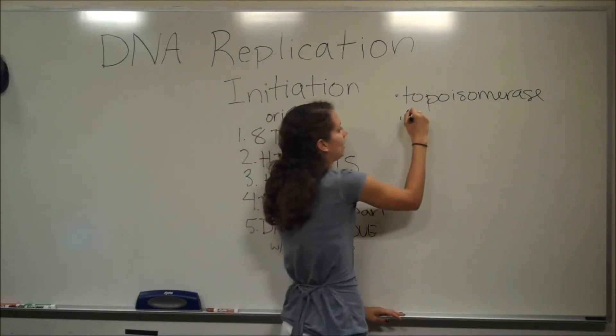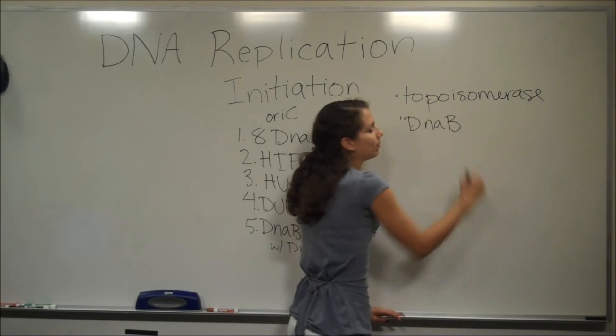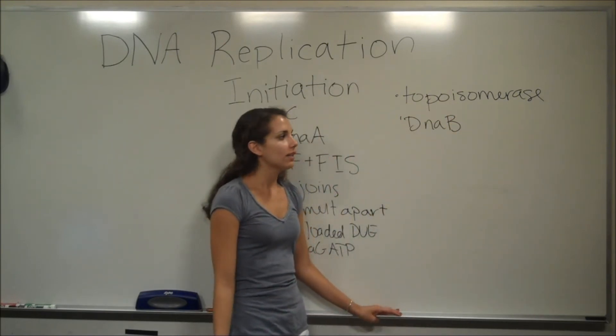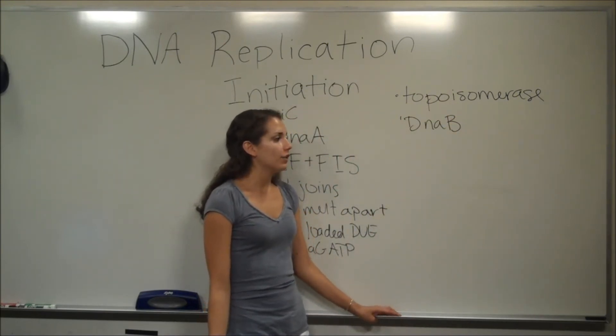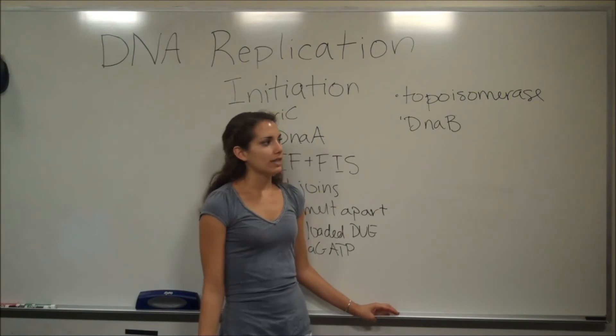DnaB, as mentioned before, is also called helicase. And DnaB unwinds DNA and promotes strand melting at the replication fork. We went over this earlier.